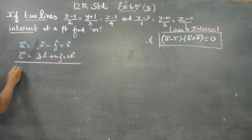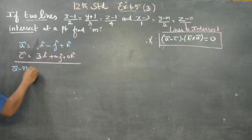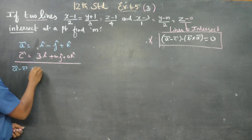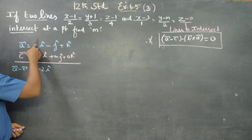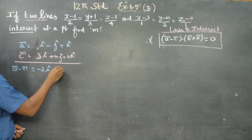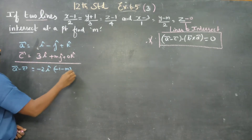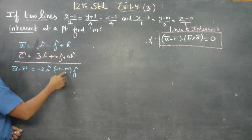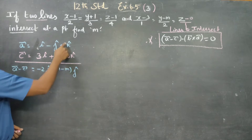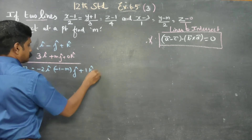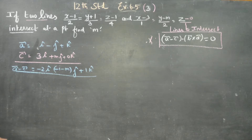Now I am going to find a minus c. So a minus c equals: (1 minus 3) i = minus 2i, then (minus 1 minus m) j, and (1 minus 0) = 1k. So a minus c = minus 2i + (minus 1 minus m)j + 1k.